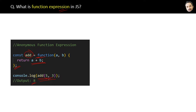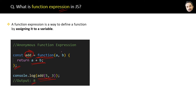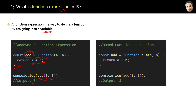So this is an anonymous function expression because we have used an anonymous function and assigned it to a variable. So what is a function expression? A function expression is a way to define a function by assigning it to a variable.